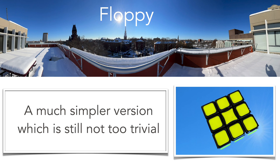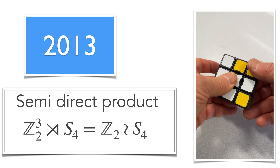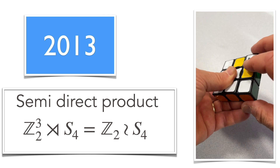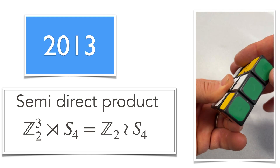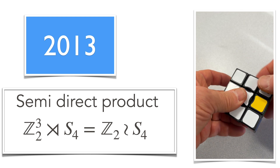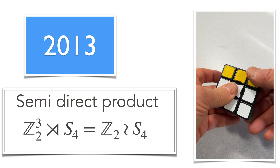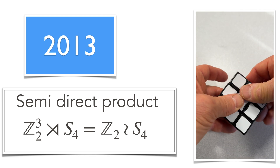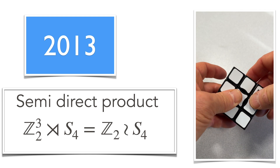The floppy may be one of my favorites because it has only 192 positions, but it's still a non-trivial, non-abelian group. The group can be seen as a semi-direct product over the symmetric group with four elements, or a wreath product.